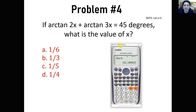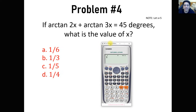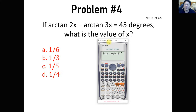For problem number 4: if arctan 2x plus arctan 3x equals 45 degrees, what is the value of x? It's simple because you have the choices. Input arctan of 2x plus arctan of 3x, and calc by substituting each choice. Whichever gives 45 degrees is the answer.